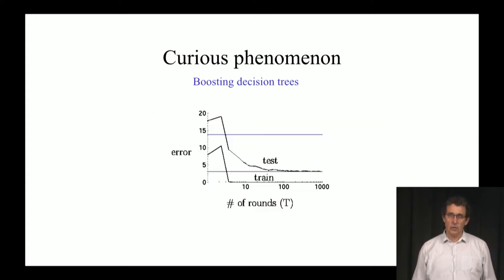So here is the phenomenon. Here is an example of using boosting on top of decision trees. What I'm plotting here is on the vertical axis the error, and on the horizontal axis it's the number of iterations of boosting, so number of trees that were combined. Note that the scale here is logarithmic.